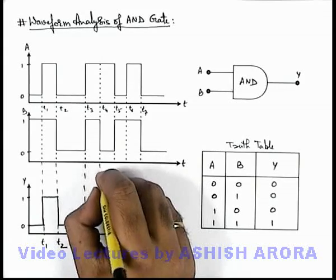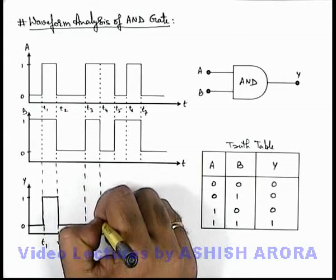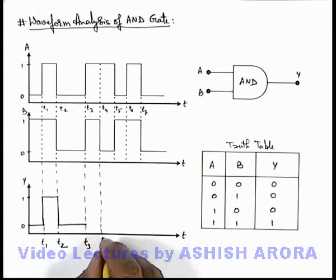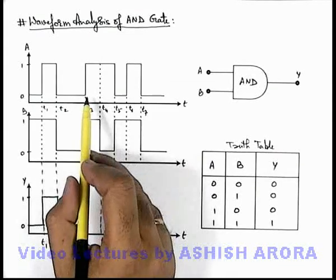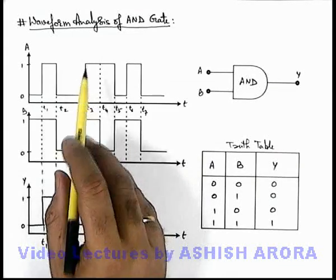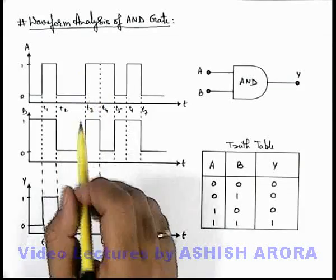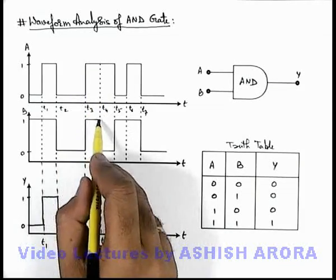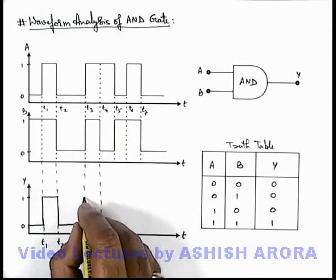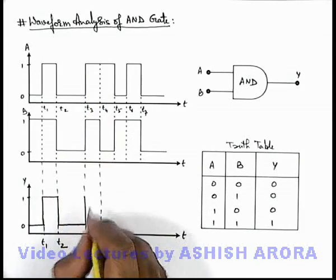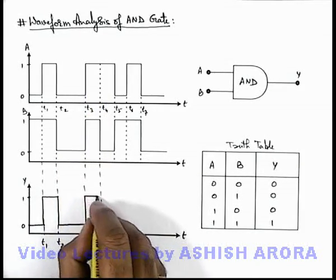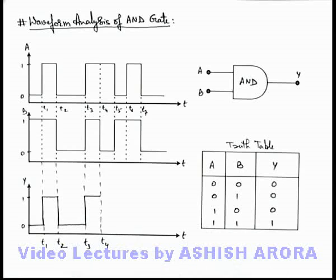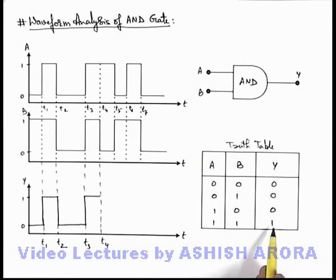And now if we further see from t3 to t4, here you can see signal A is in one state and B is also in one state, so this will also again rise to state one, because if both are one the output will be one.